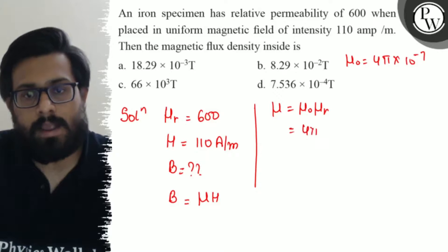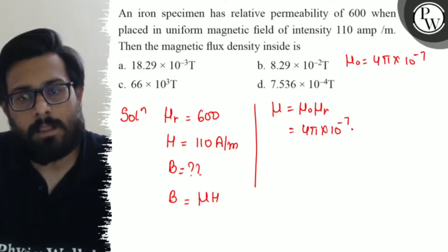Putting the values, 4 pi into 10 to the power minus 7 into 600, so it comes out to be 24 pi.